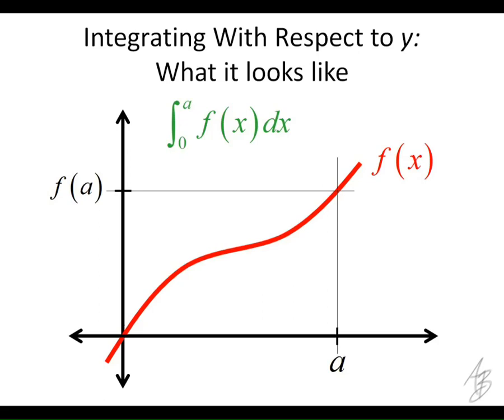The first is that this is a strictly increasing function, or a non-decreasing function would work also. Now there's a slight difference between increasing and non-decreasing. A non-decreasing function could also be constant. It could have a zero slope at some point where an increasing function wouldn't necessarily. But it is an increasing function over the interval from zero to a, and also it goes through the origin.